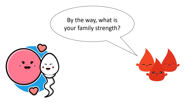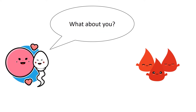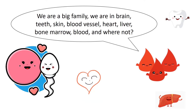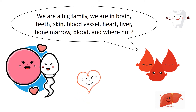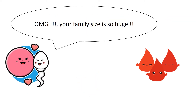By the way, what is your family strength? We are just two — sperm and ova. What about you? We are a big family. We are in brain, teeth, skin, blood vessel, heart, liver, bone marrow, blood, and more. Oh my god, your family size is so huge.